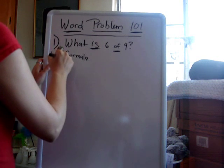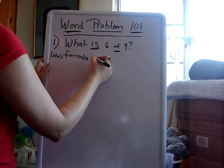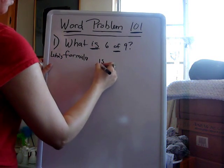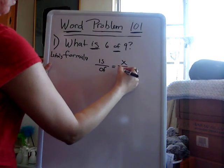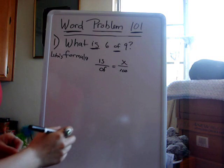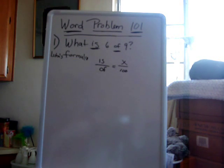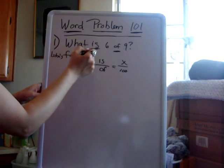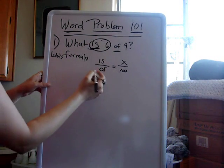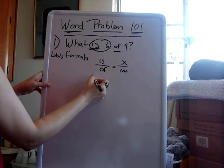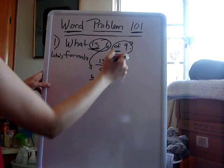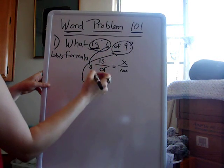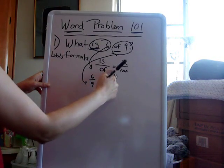Notice the formula. It's pretty simple — yes, it is my own formula, I should patent it. It's: is over of equals x over 100. The x is a percentage number over 100. Notice the six: there's 'is,' so we're writing six on top. And the nine goes on the bottom in the denominator, because it's the 'of.'